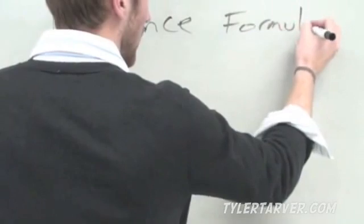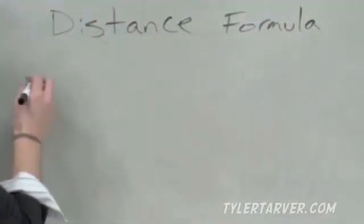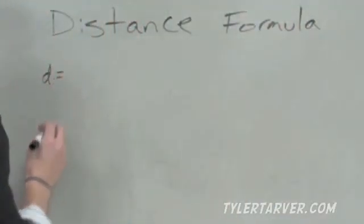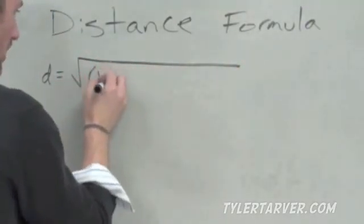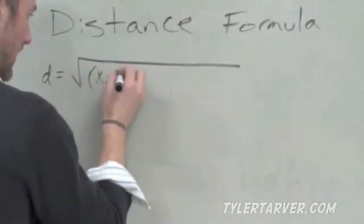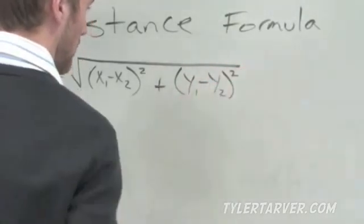Distance formula. Write this down on your paper so you have it. D equals square root x1 minus x2 squared plus y1 minus y2 squared. If you don't have that written down, write it down because you need it. That's the distance formula.